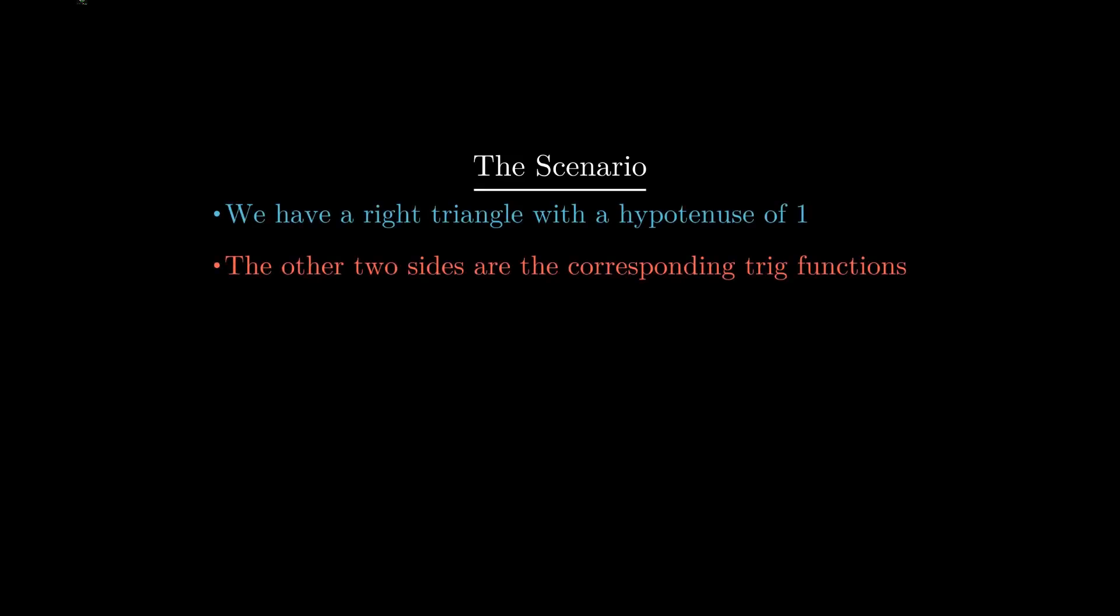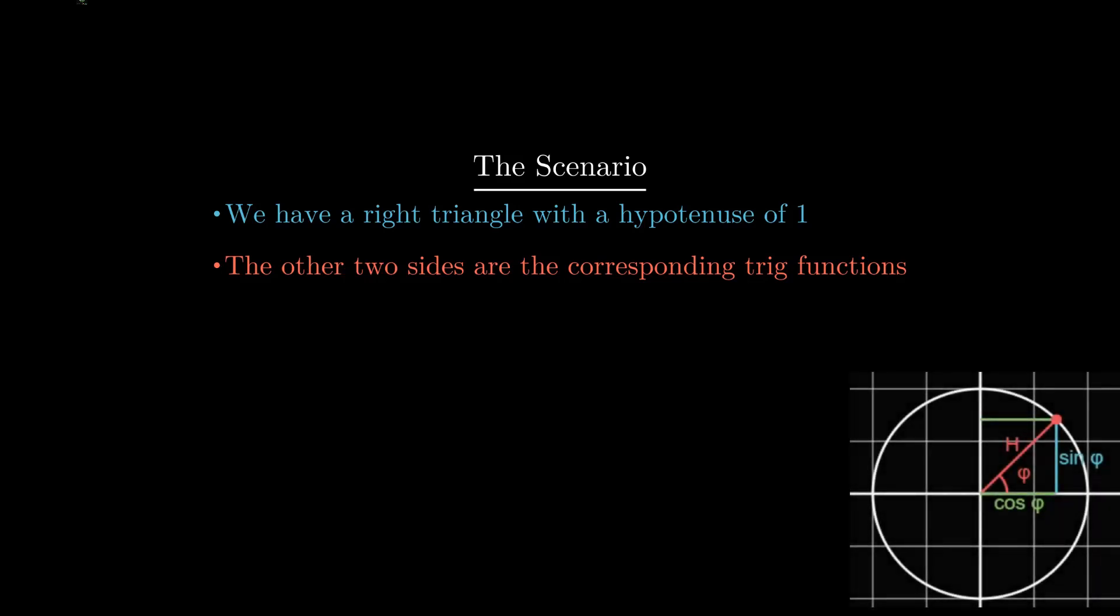Now that we have an idea of what the basic trig functions are, we can discuss the topic of our video. When we have a right triangle, it has three sides, two of which are our functions, and the hypotenuse, which by design has a length the same as the radius of the circle, and thus has a length of 1.